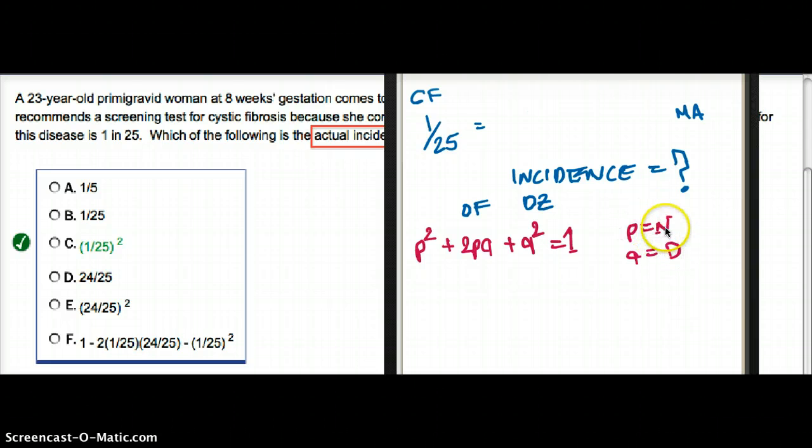The frequency of P squared is normal, Q squared is the disease, and 2PQ is the heterozygote. But the question in this case is saying incidence of the disease. In this case, the incidence of the disease is going to be finding Q squared. That's exactly what we have to find.